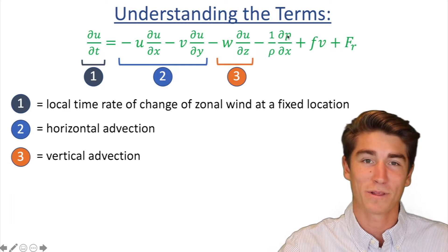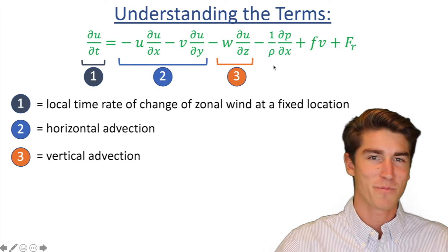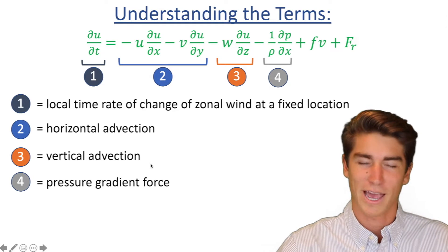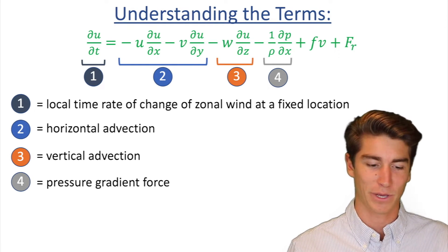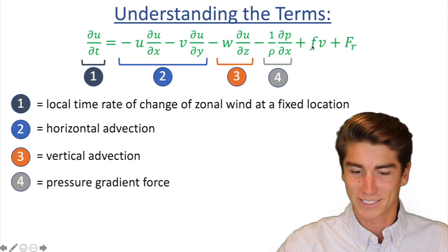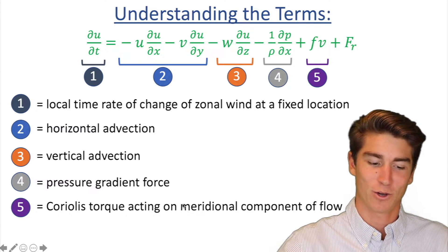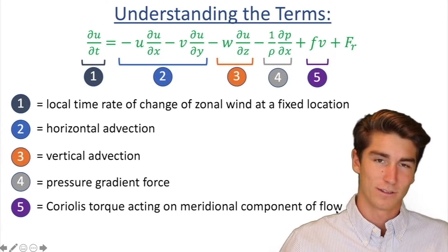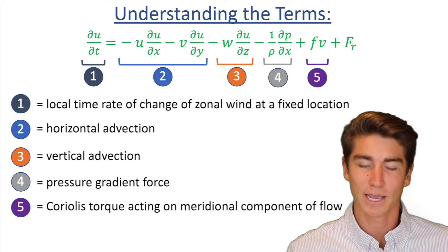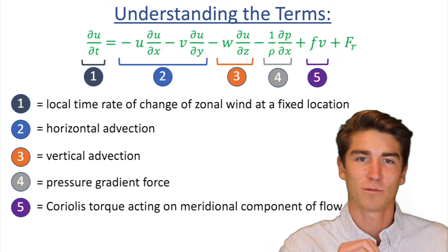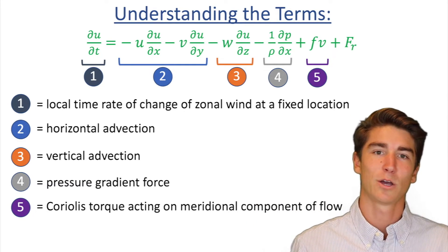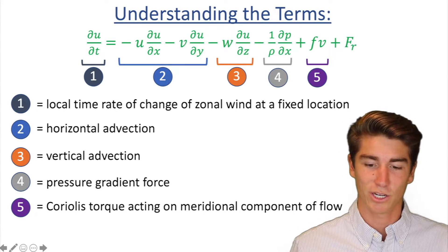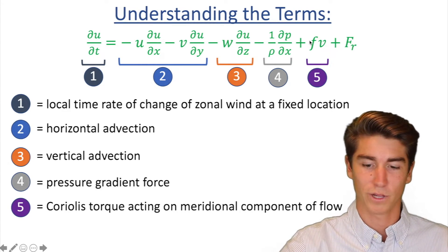Now, this one here, you see the p, you remember that's pressure, rho is density. So you might have kind of an idea of what that's going to be. It's going to be the pressure gradient force. And I'll put up a figure for that later so you can actually kind of picture what that is. Here, what do you think it's going to be? We got that f term, exactly, Coriolis. And I wrote, Coriolis torque acting on meridional component of flow. Sounds complicated, but the reason I say meridional is because, remember, in that f term, it had to do with latitude. So it has to do with if you're changing latitude. So meridional. If you're just zonal, that phi isn't going to change at all. So this f term is not going to change at all. So we wouldn't really care about it.